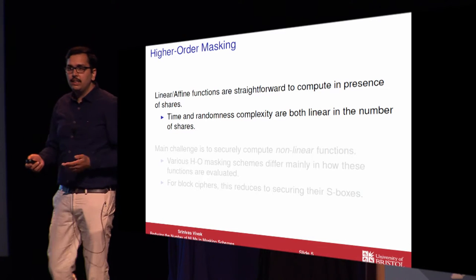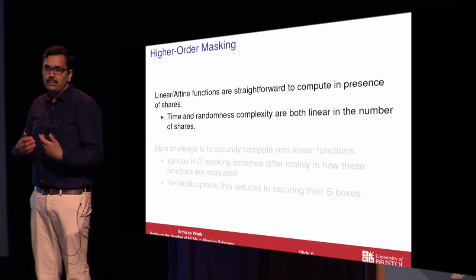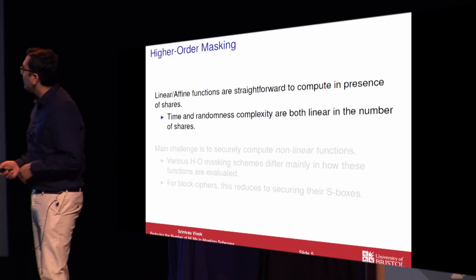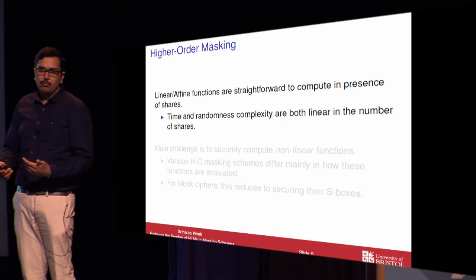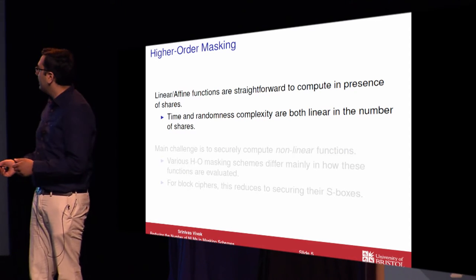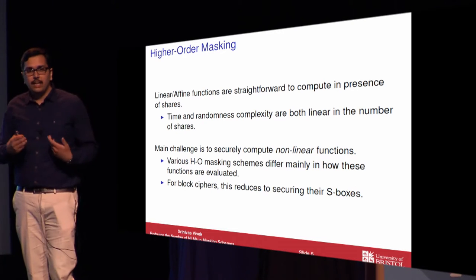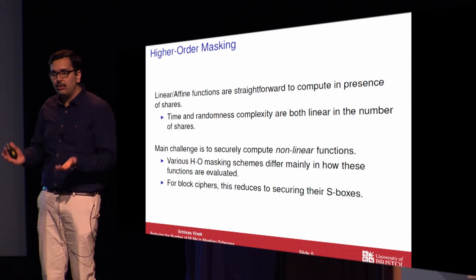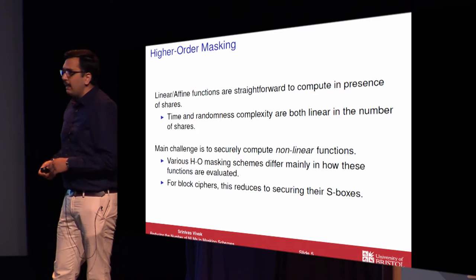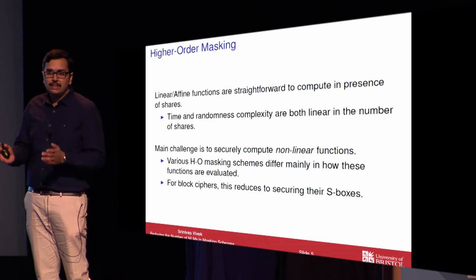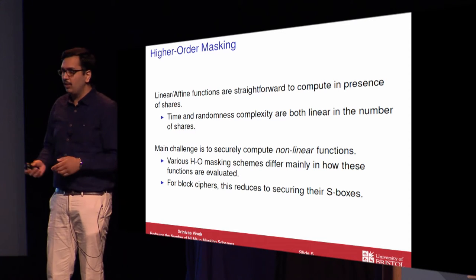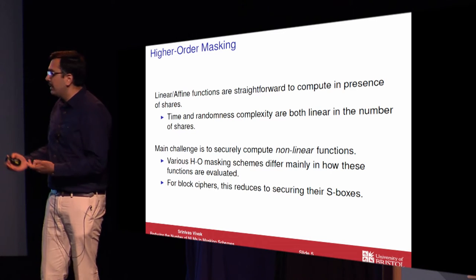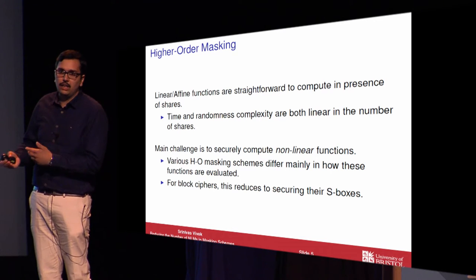As mentioned in the previous talk, the linear affine functions are straightforward to compute in the presence of shares, and the time complexity and random complexity is linear in the number of shares. So the main challenge while designing higher order masking schemes is to secure non-linear functions and operations. Various higher order masking schemes mainly differ in how they secure the non-linear operations. Note that in a block cipher evaluation, only the S-box computations are non-linear operations.